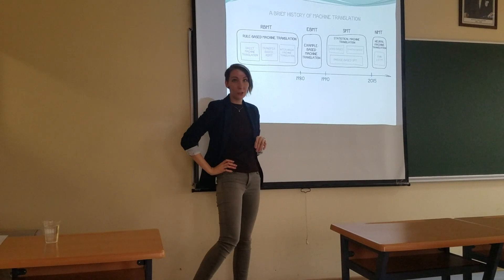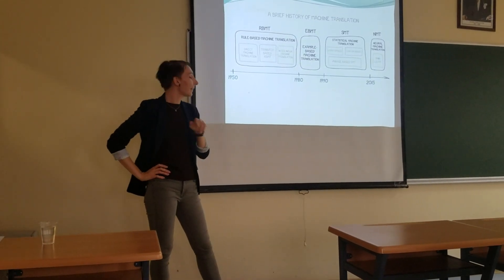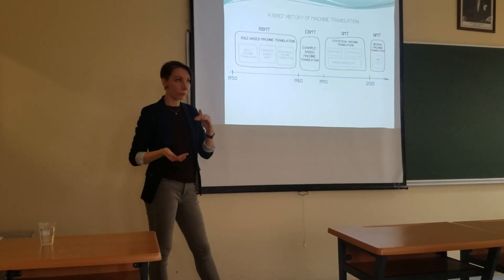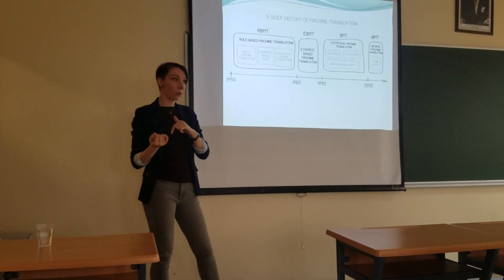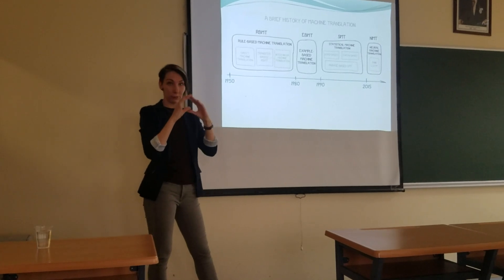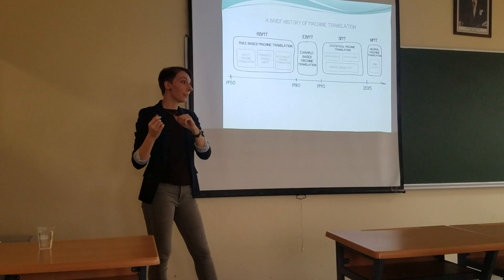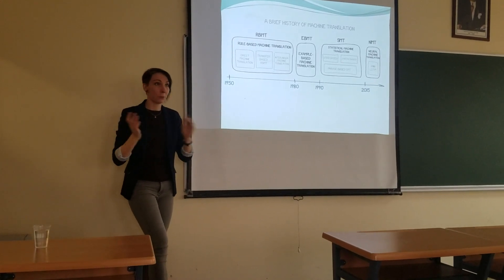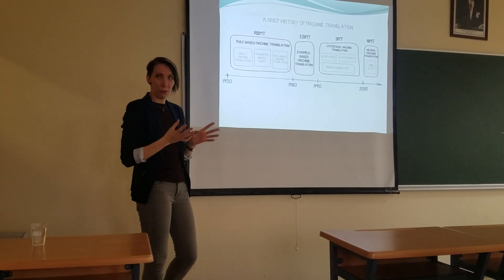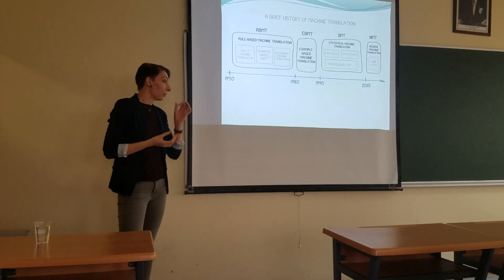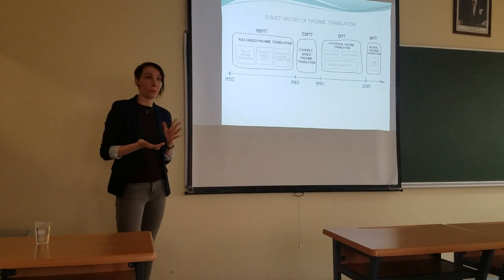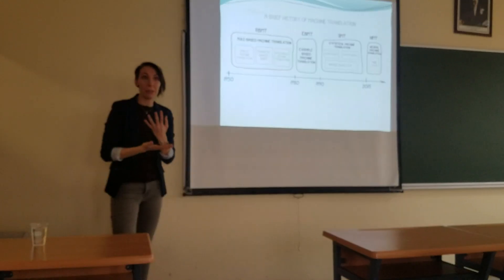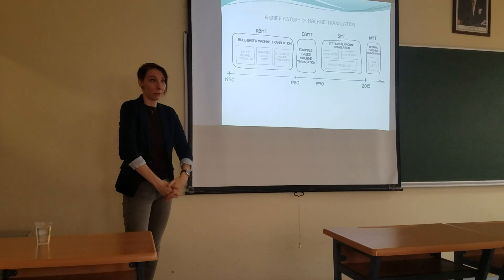Then we had example-based machine translation. This didn't have grammatical rules or a dictionary. What it had was a huge database of translations made by humans before. Every time you fed the machine with a sentence, it went to its memory and looked to see if somebody had already translated that text. If yes, that was the result. It was again slightly awkward — for example, the word 'key' could be translated with at least five different meanings: key on the keyboard, key to lock the door, key as a main feature, etc. It didn't work well.